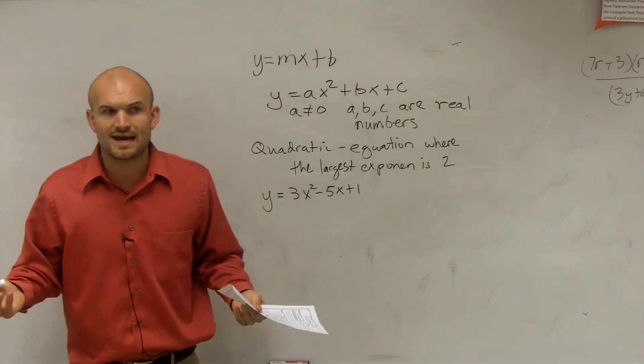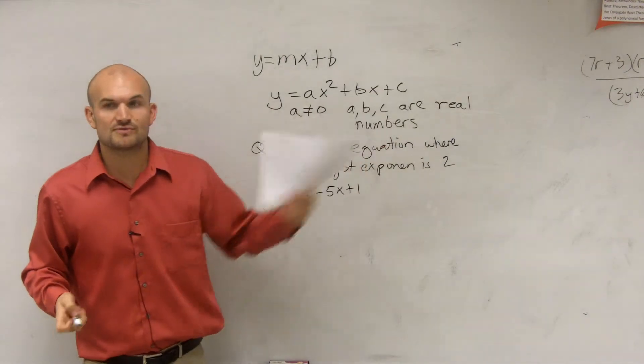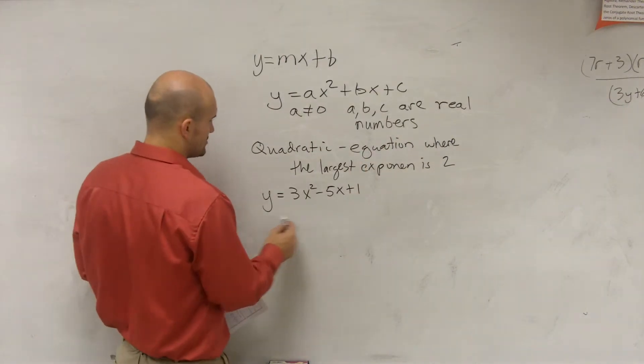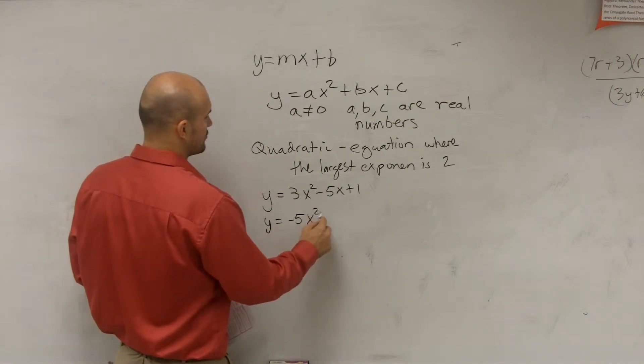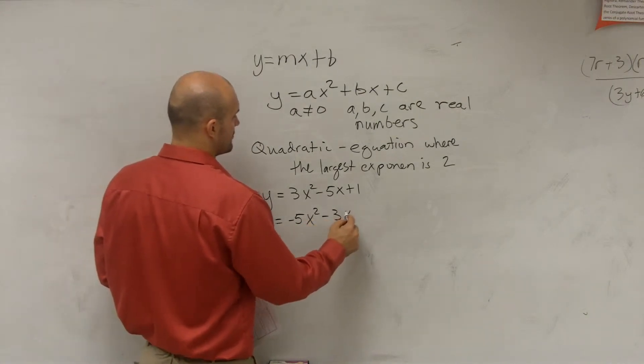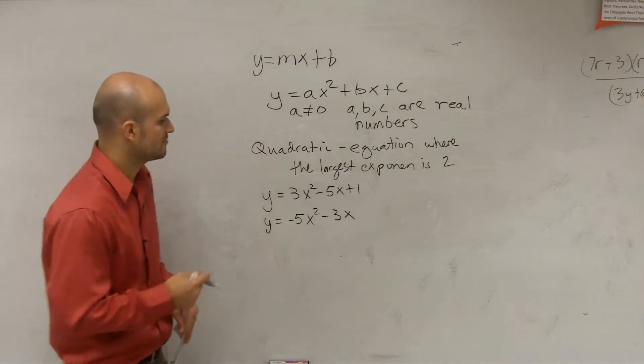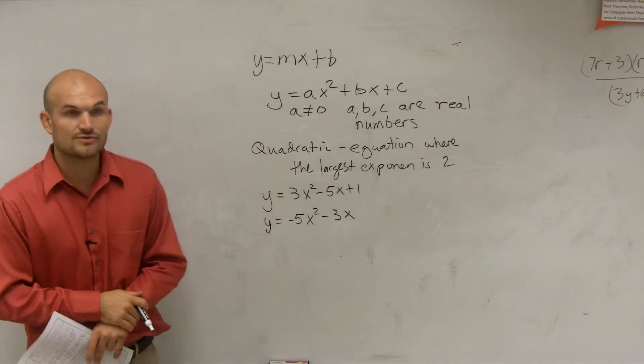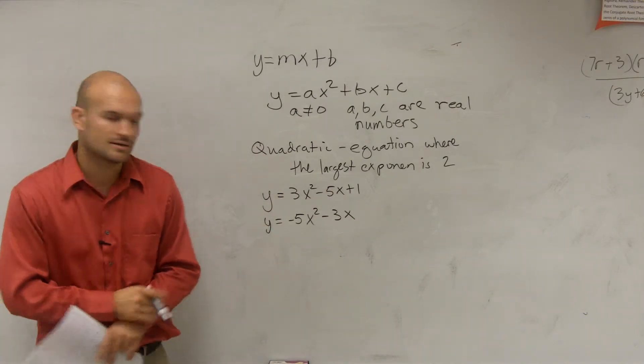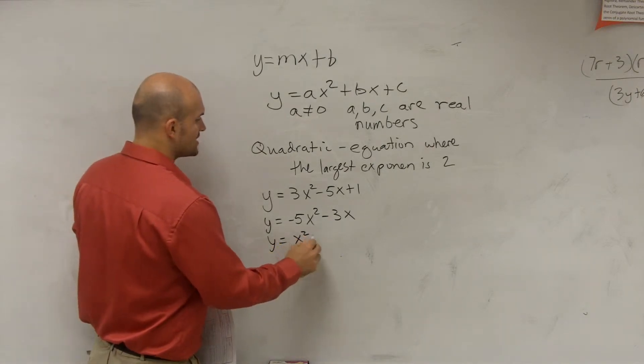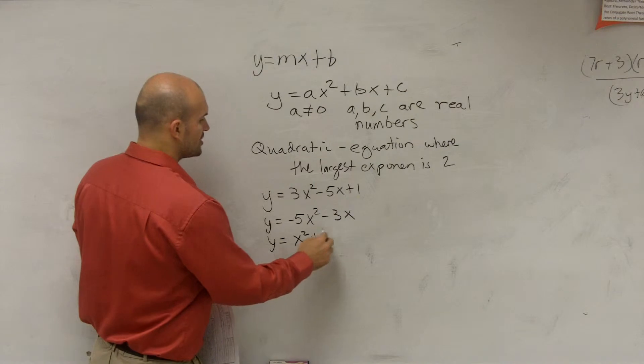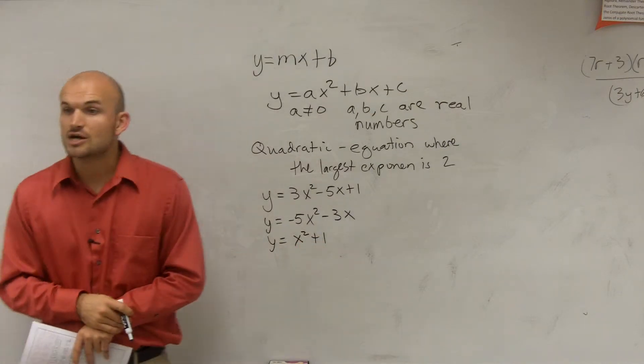However, we don't have to have all these terms for it to be quadratic. You could also say y equals negative 5x squared minus 3x. That's also a quadratic. You could say y equals x squared plus 1. That's also a quadratic.